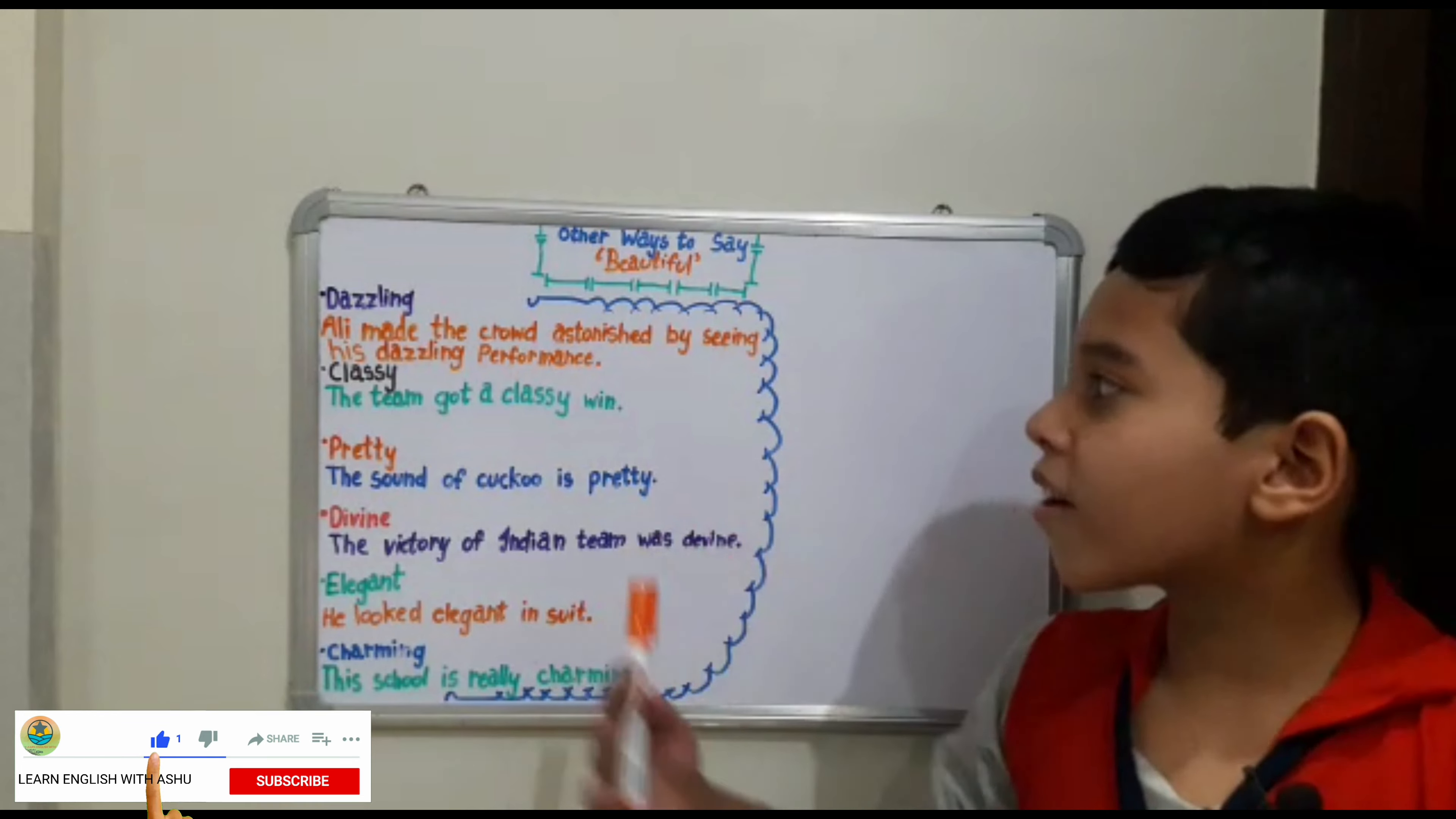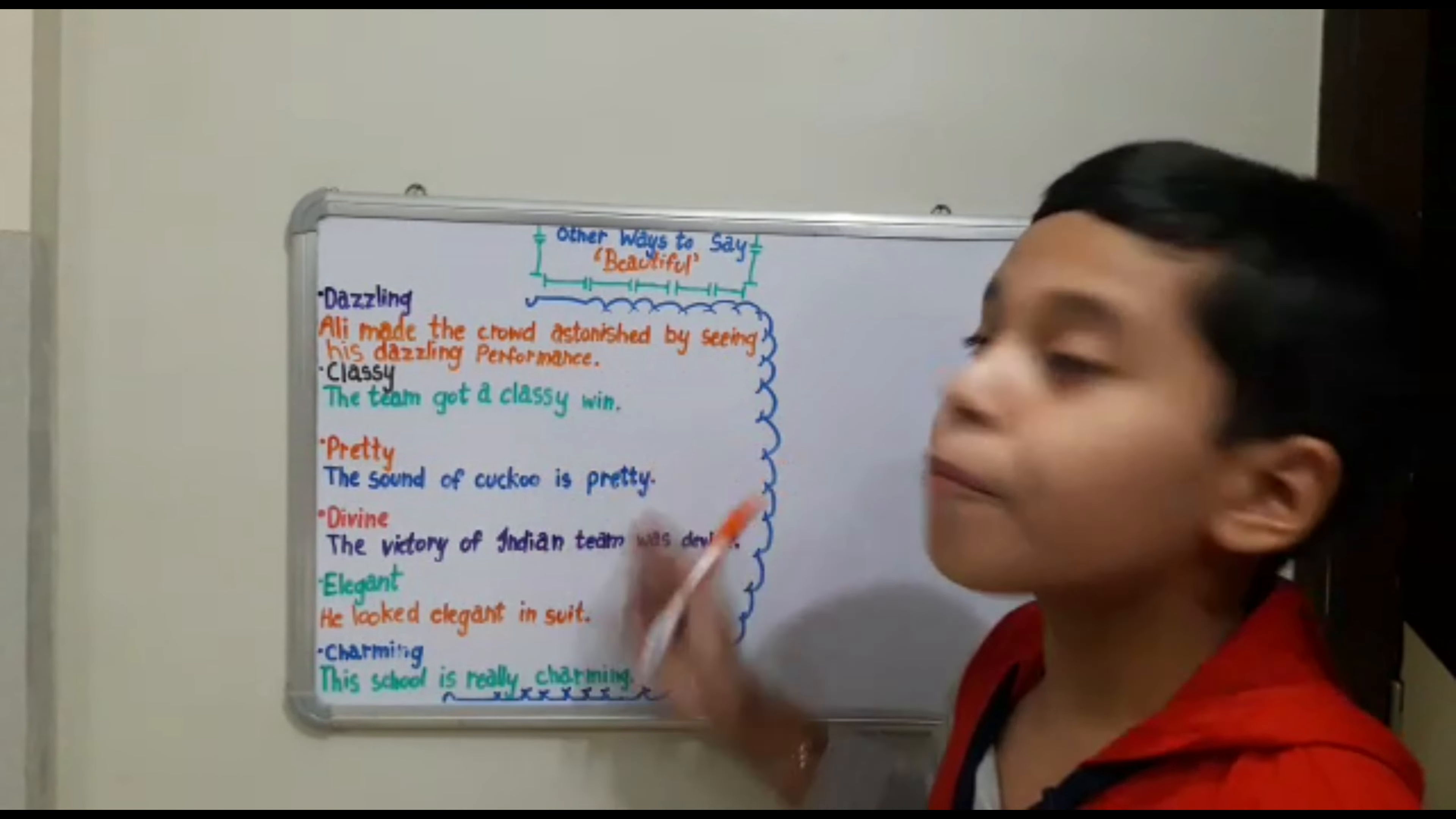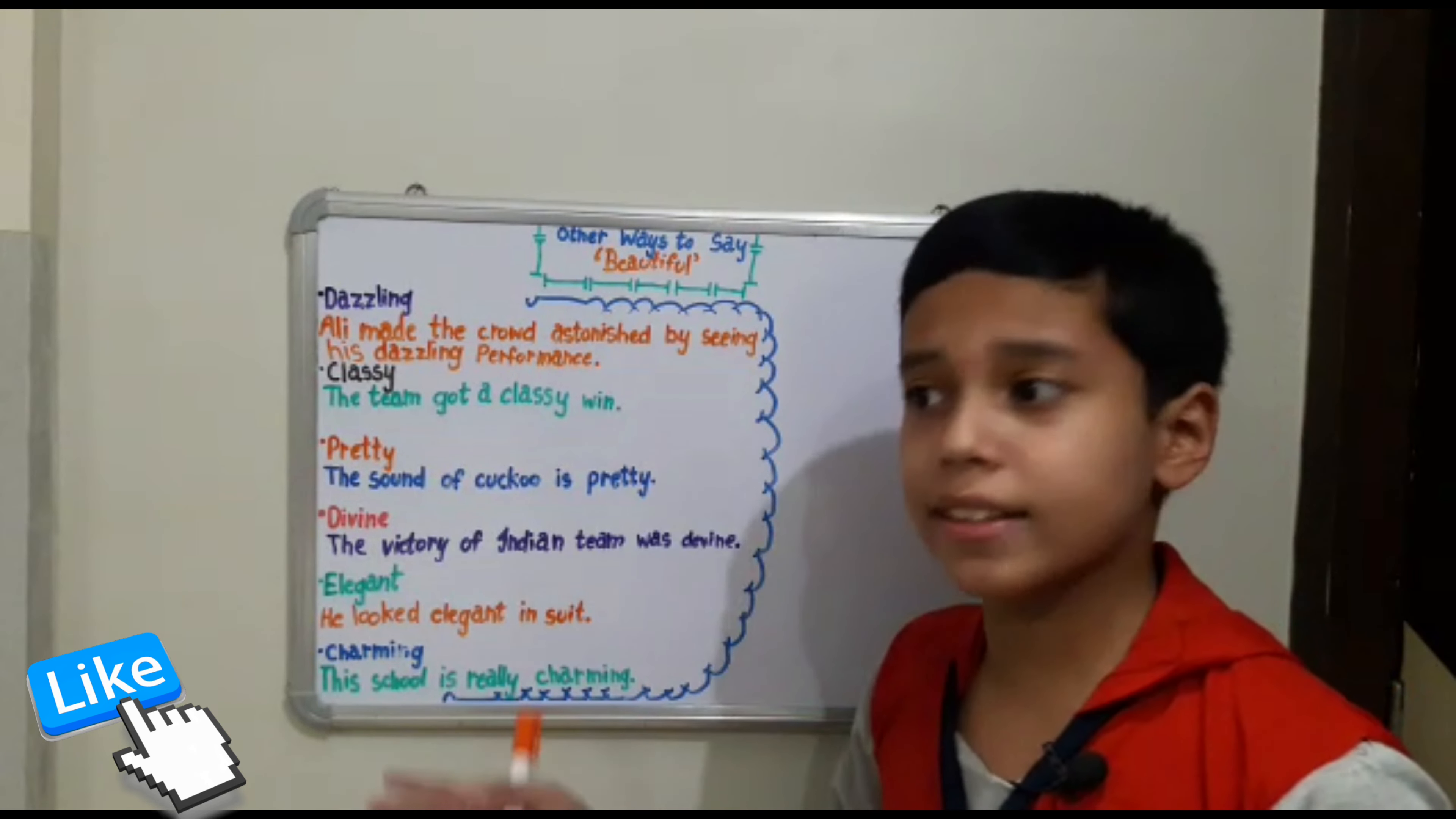Hey guys, our first word is dazzling. This means that it is very beautiful and it is like dashing. For example, Ali made the crowd astonished by seeing his dazzling performance. Believe that Ali, who is a girl, has done some performance and the performance is very good, like the crowd people were sitting in the crowd and they thought that this is a good performance.